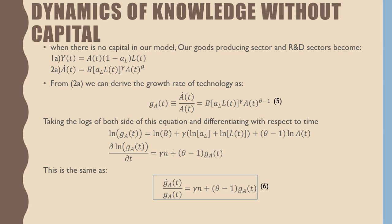And our second equation, which is our R&D sector, is B(a_L)(L(t))^γ times A(t)^θ. These are all output elasticities or factors that contribute to the evolution of technology.